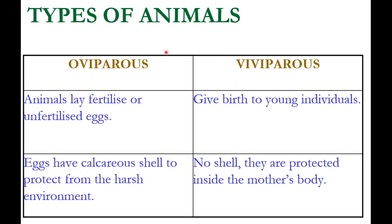In oviparous animals, eggs have a calcareous shell to protect them from the harsh environment, and development takes place inside the egg. In viviparous animals, there is no shell — they are protected inside the mother's body and development takes place within the mother's body. These are the key differences between oviparous and viviparous animals.